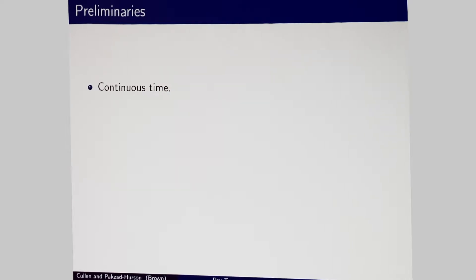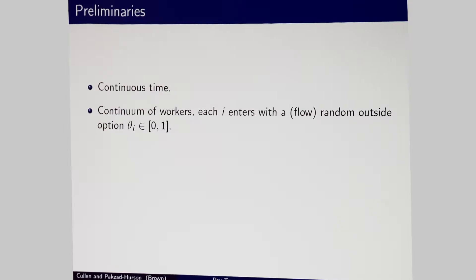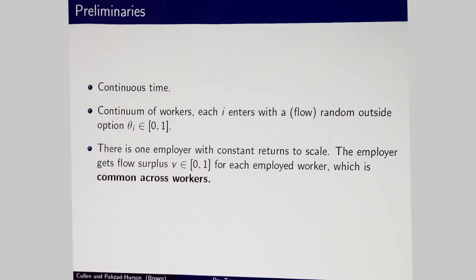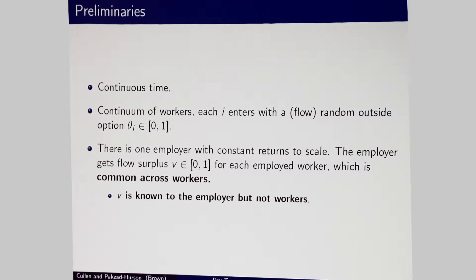This will be a model with continuous time. We have a continuum of workers indexed by I as a generic worker, who enter the market with an outside option theta. There's a single employer who has constant returns to scale — very happy to hire everyone. The employer gets a surplus of V from each worker hired. This V is common across workers; all workers are equally productive. Importantly, V is known to the employer but not to the workers. Only the employer knows how much a worker is worth.